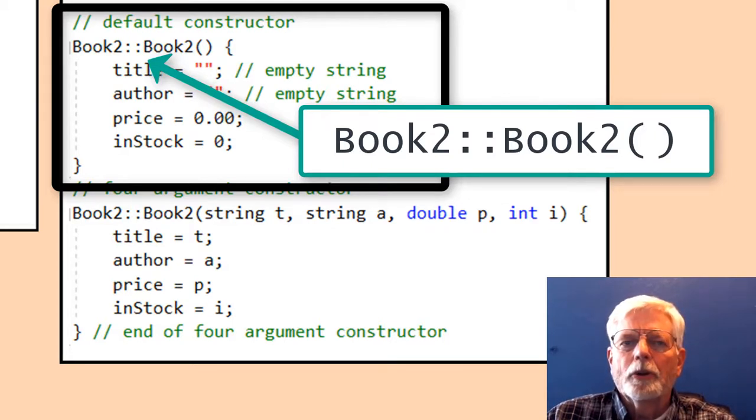After Book2 colon colon is Book2 open close parenthesis, which is the name of the default constructor. This is how the code in the two files are linked together.